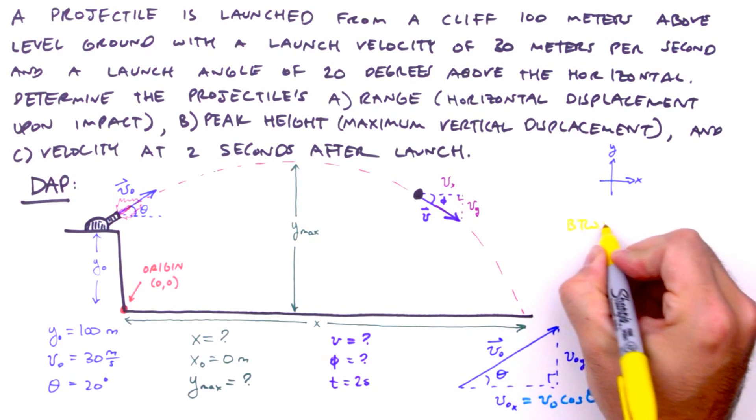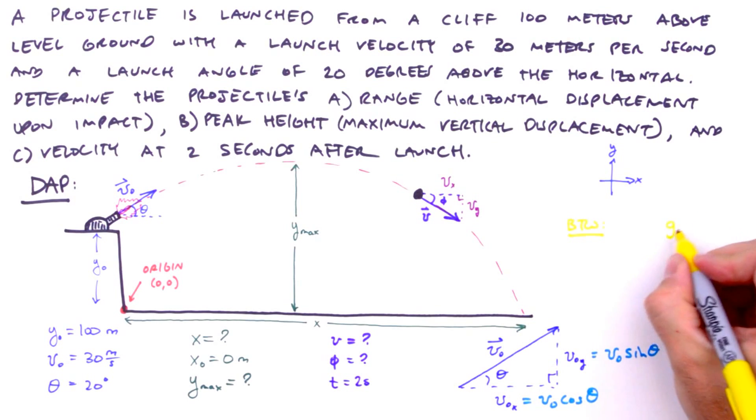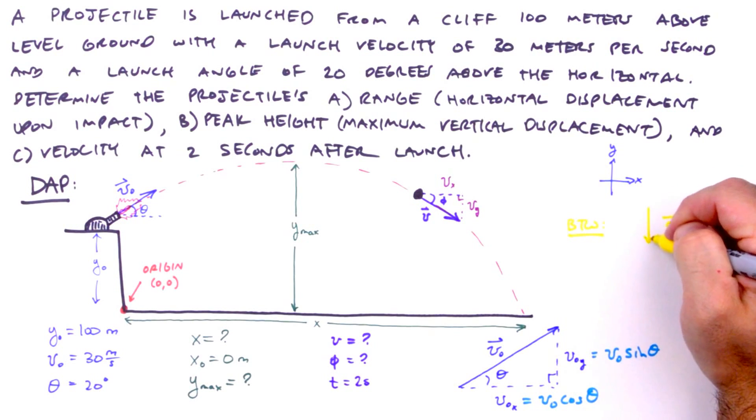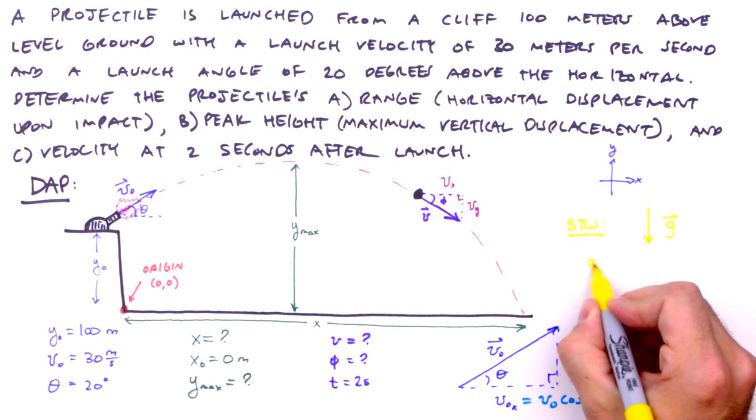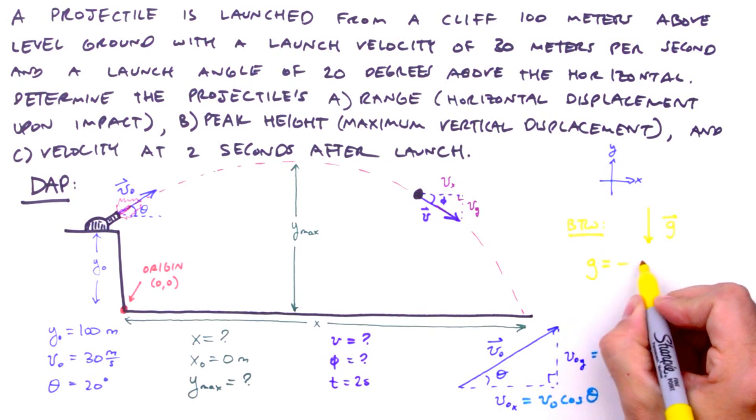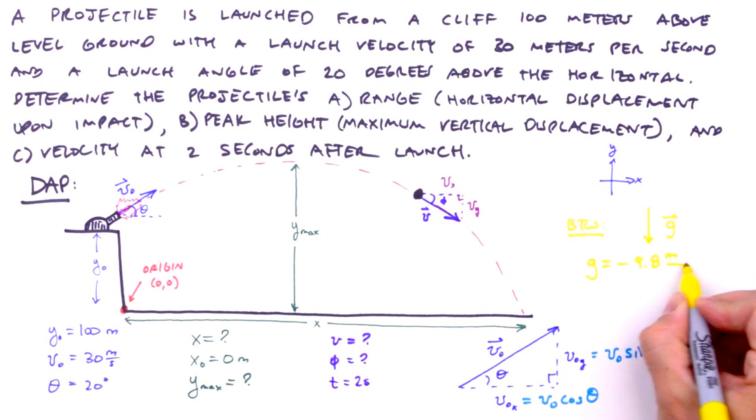By the way, we've got an implied known that should be listed. The acceleration due to gravity. What value should we use for g? Or more to the point, is the magnitude of g positive or negative? Well, it all depends on our coordinate system, so we need to compare the acceleration vector to our chosen coordinate system. What's the direction of the acceleration vector? Downward, of course. Since we align the positive y-axis with the upward direction, and the acceleration vector is downward, that means that the magnitude of g for this problem will be negative 9.8 meters per second squared.